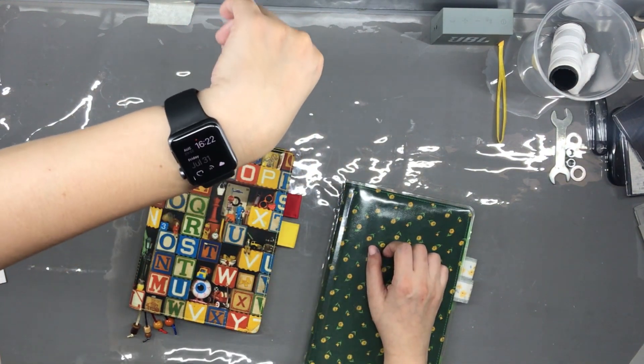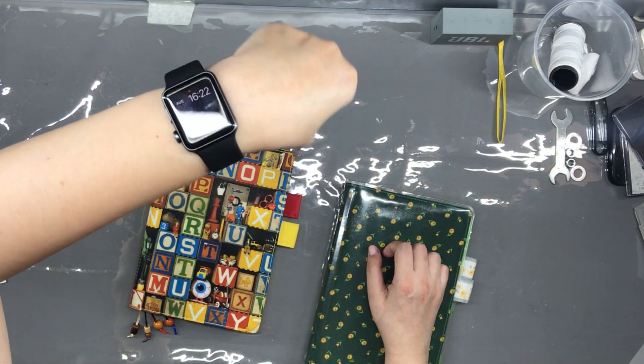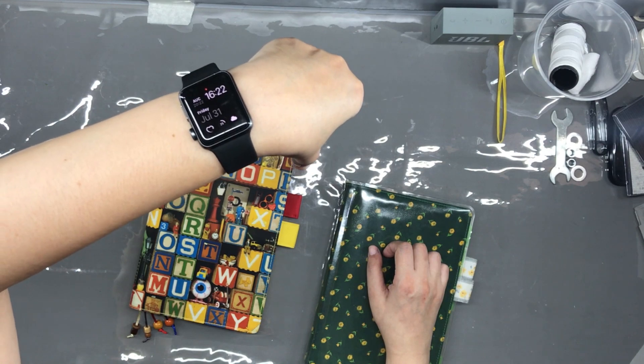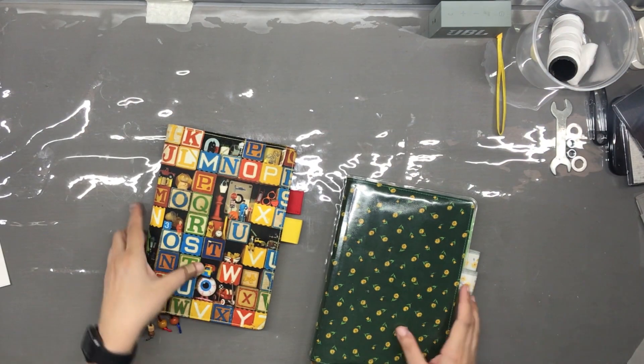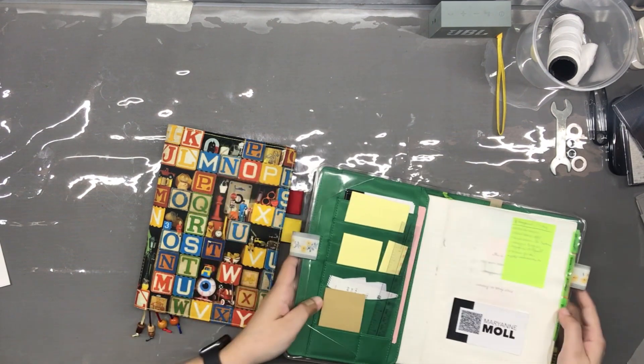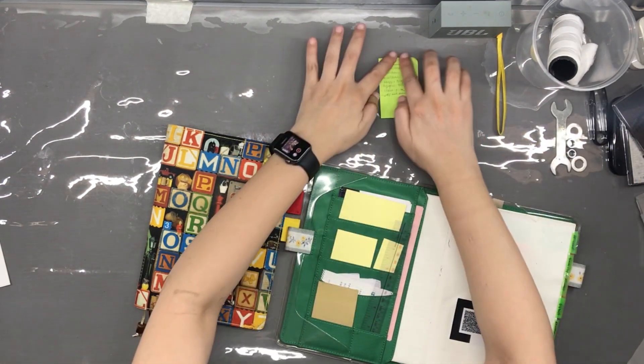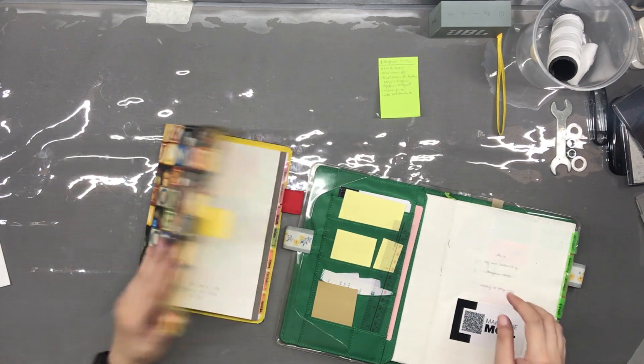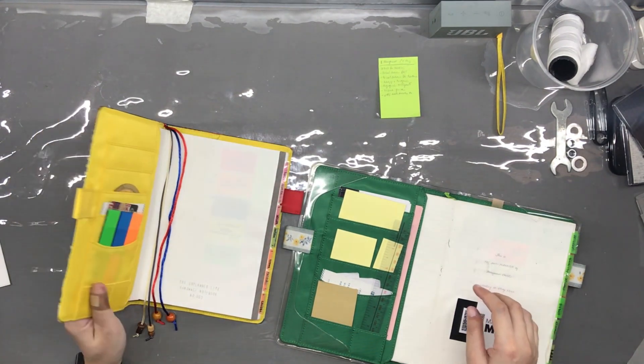On July 31 at about half past four in the afternoon, I decided to move out of my then current anti-planner and move all information and other things from the notebook and notebook cover I was using into the new notebook and notebook cover that I have prepared to use next.